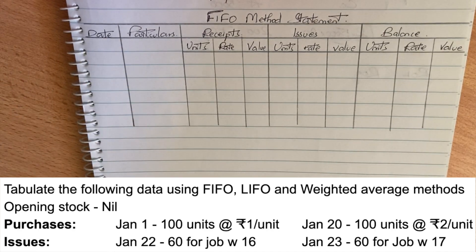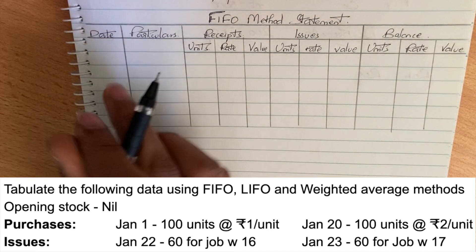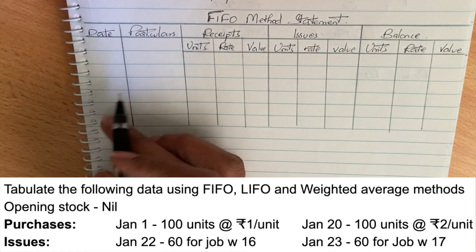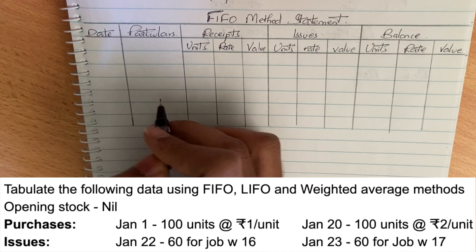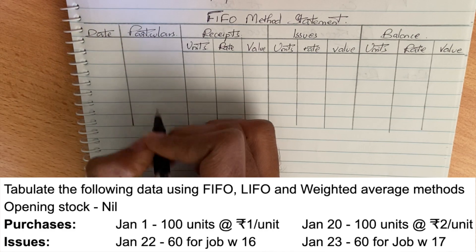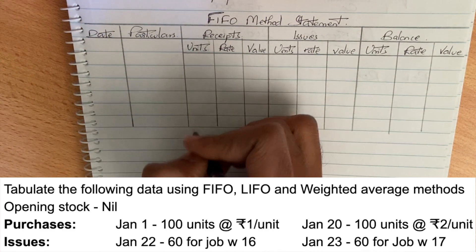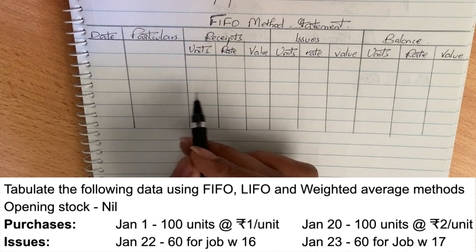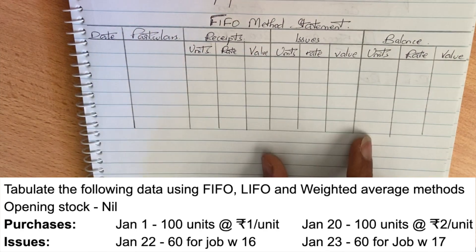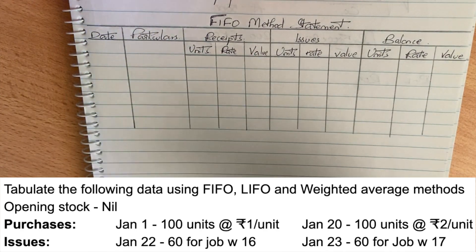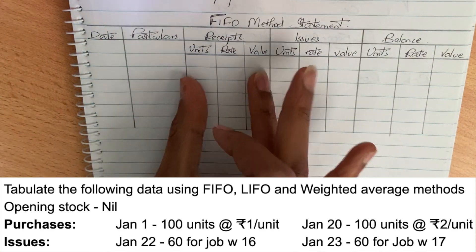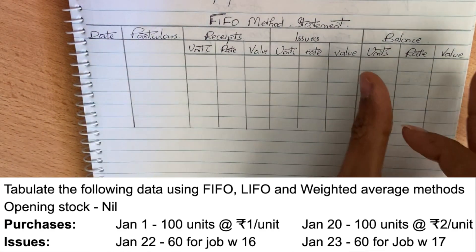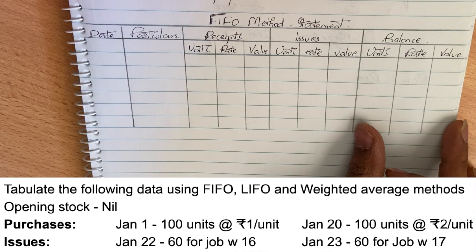First-in-first-out method — FIFO method. The problem is presented in the form of a table. Here we have the date, the particular issue or purchase, receipts and purchases, issues, and finally the balance.